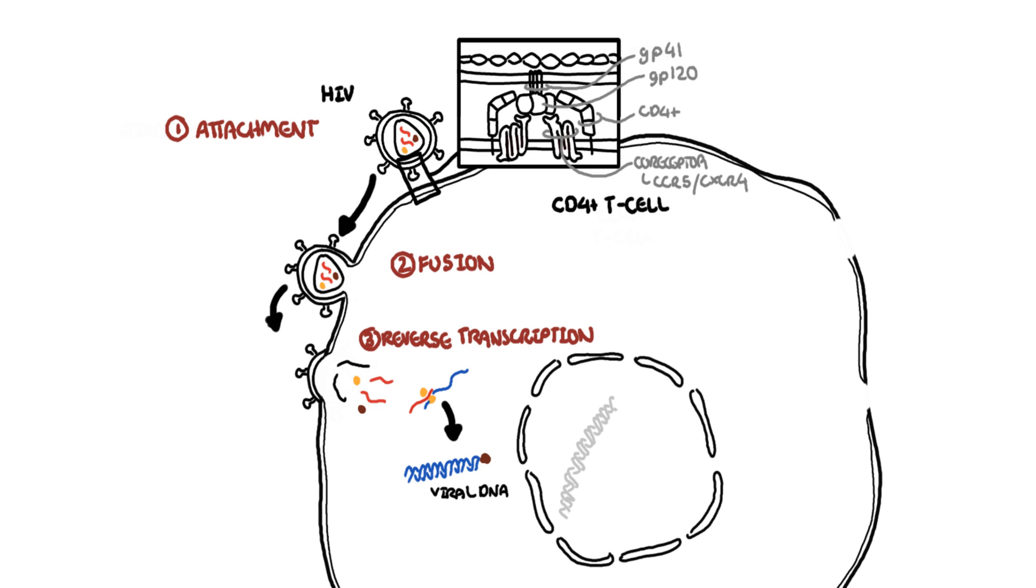From a single-stranded viral RNA, the virus produces double-stranded viral DNA, which will be transported to the nucleus of the host cell via integrase. This allows integration of the viral DNA with the host DNA, which is the fourth step in the HIV life cycle.